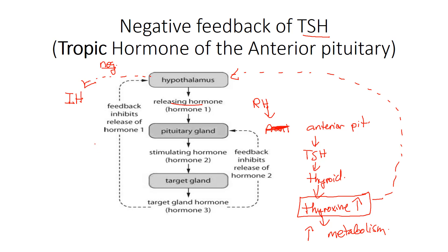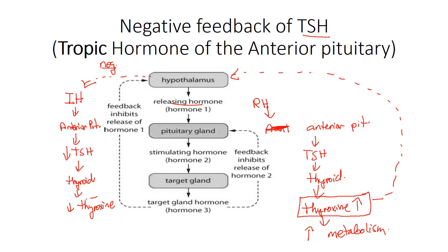An inhibiting hormone is exactly like it sounds — it sends a message to the anterior pituitary to stop the production of TSH. Once you have a decrease in thyroid-stimulating hormone, no message goes to the thyroid, and the thyroid stops releasing thyroxin. This is how we maintain our balance of thyroxin levels — balance, homeostasis.